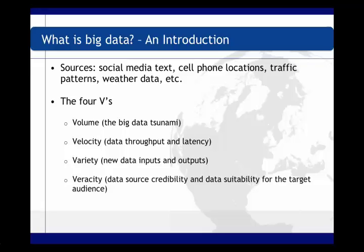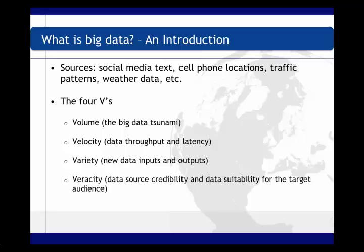Finally, veracity. Unlike carefully governed internal data, most big data comes from sources outside of our control and therefore suffers from significant correctness and accuracy problems, requiring a lot of preprocessing. Veracity exhibits itself in both the credibility of the data source and the suitability of the data for the target audience. These four V's — volume, velocity, variety, and veracity — are the most widely discussed characteristics and differentiate big data from previous data sets.